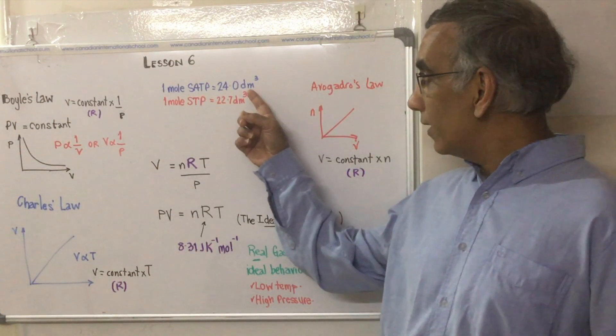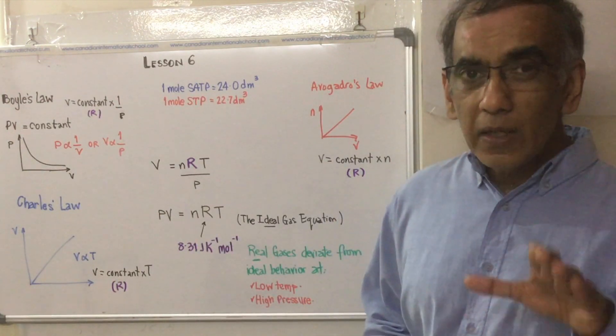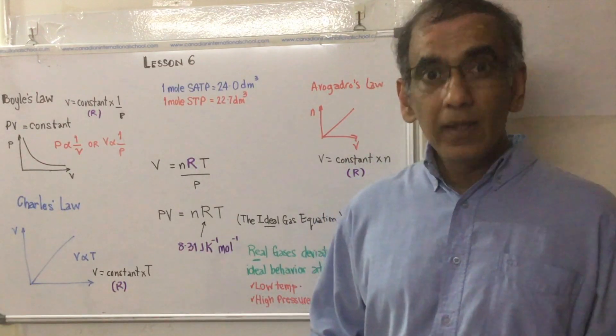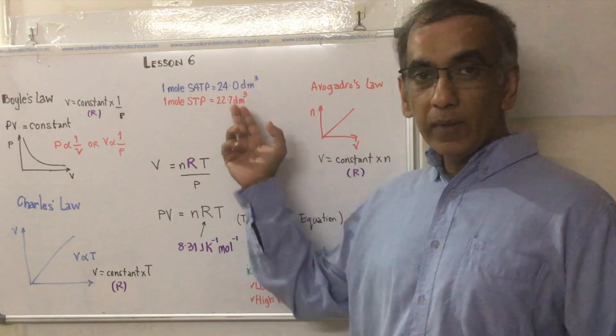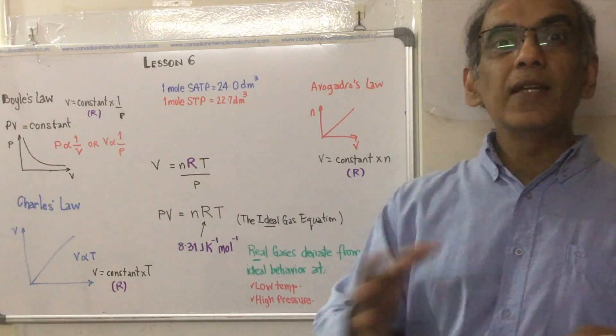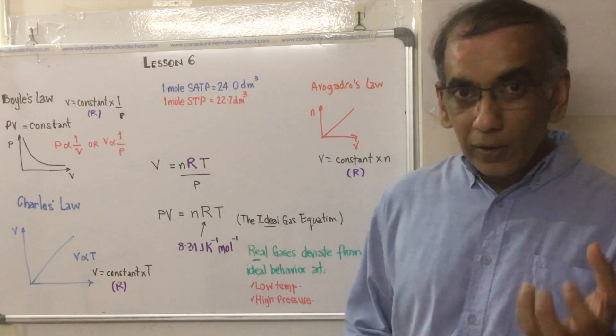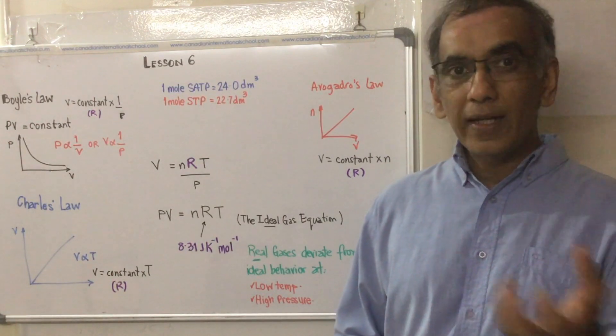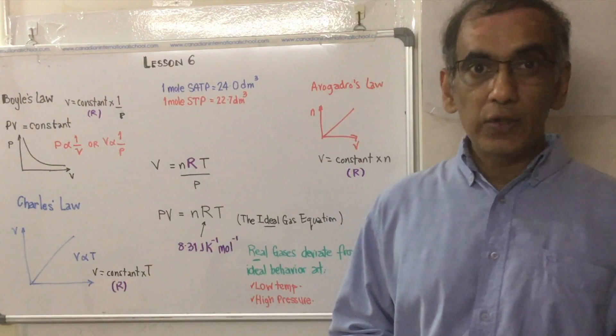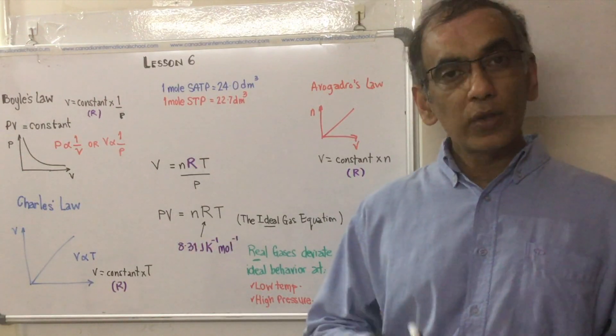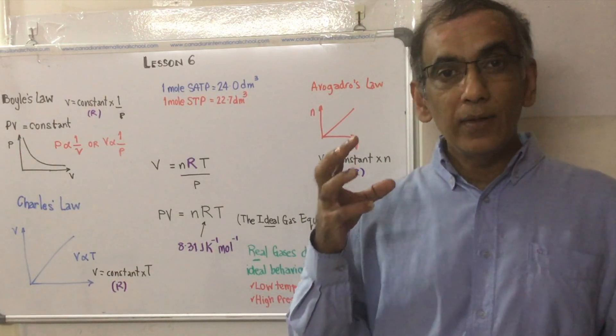How could we determine the number of moles of gas that we had? We don't have a set value like 24 or 22.7 to work with, but surely there must be a way to calculate how many moles you've got because these two would have been arrived at in some way. So what is that secret formula to arrive at the relationship between volume of the gas at standard pressure and a particular temperature and the number of moles?